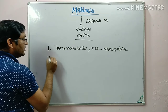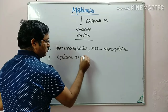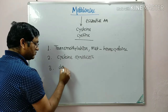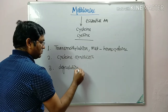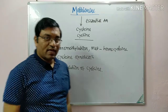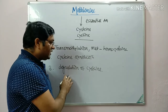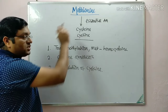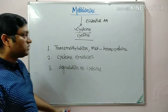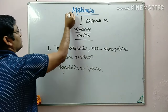The second step in methionine metabolism is cysteine synthesis, and the third is the degradation of cysteine. So step by step: transmethylation and conversion of methionine into homocysteine, formation of cysteine, and degradation of cysteine. Methionine is an essential amino acid converted into cysteine. If we give dietary cysteine, that reduces the requirement of methionine — this is known as the sparing action of cysteine on methionine.